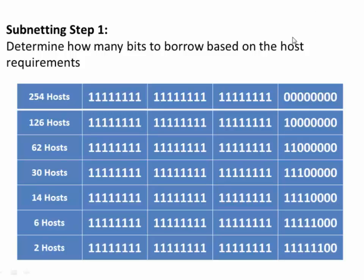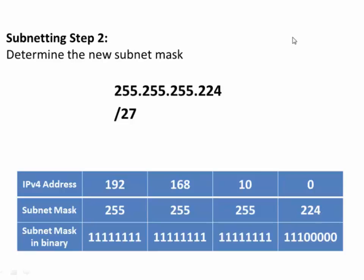We know we're going to borrow 3 bits. Borrowing 3 bits leaves us with a /27 subnet mask, because there are 27 ones in the subnet mask. To convert the subnet mask to decimal, we add up the place values of the ones in the last octet: the 128s place, the 64s place, and the 32s place. 128 plus 64 plus 32 is 224. This is our new subnet mask.